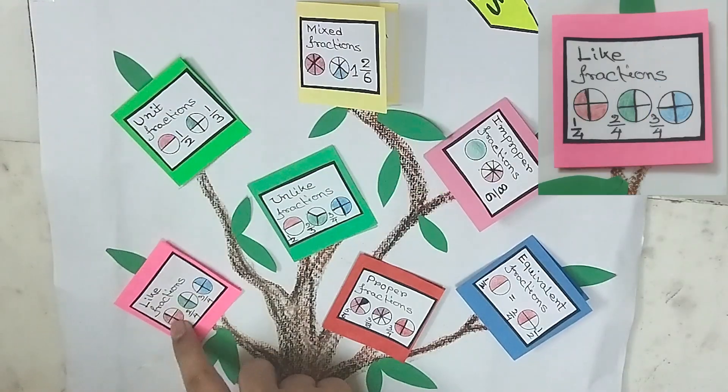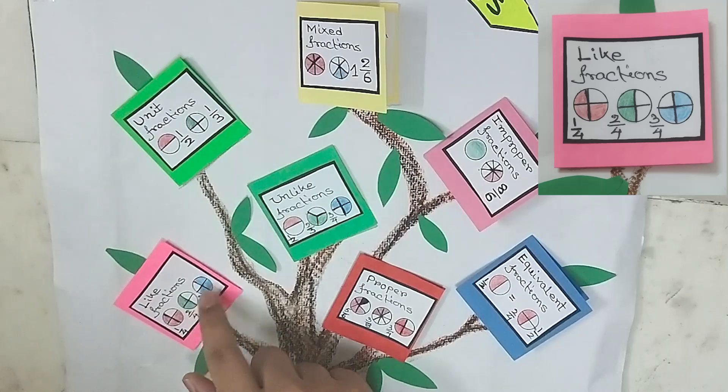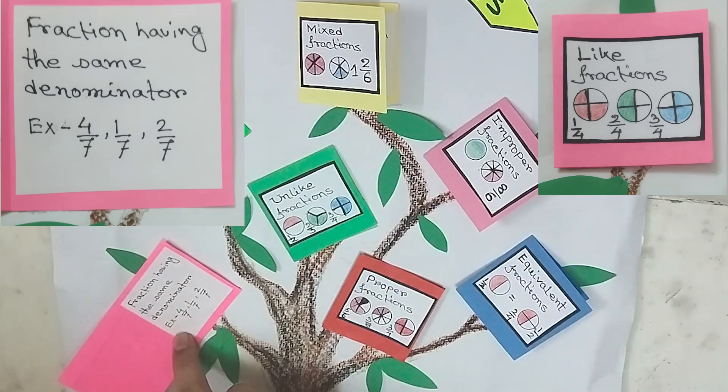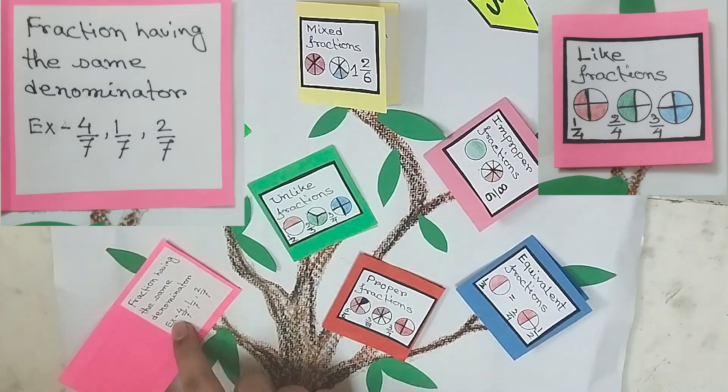Like fractions. One by four, two by four, three by four. Fractions having the same denominator. These are called like fractions. Four by seven, one by seven, two by seven.